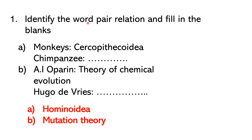The first question: identify the word-pair relation and fill in the blanks. Monkeys → Sarcopythecoids; Chimpanzee → dash. Oparin → Theory of Chemical Evolution; Hugo DeVries → dash. Answer: Chimpanzee → Hominoid. Oparin and Haldane proposed the Theory of Chemical Evolution. Hugo DeVries proposed the Mutation Theory — mutations produce new species in the next generation.